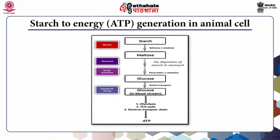Here we look at the schematic representation of starch to energy generation in animal cells. Starch converts to maltose through salivary alpha-amylase, and maltose is further converted into glucose by pancreatic alpha-amylase. Glucose then moves through active transport into the bloodstream and enters glycolysis, the TCA cycle, and the electron transport chain, producing ATP. The slide also indicates the various locations where these enzymatic reactions take place.